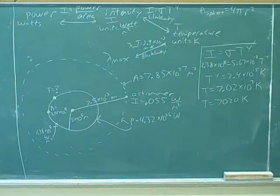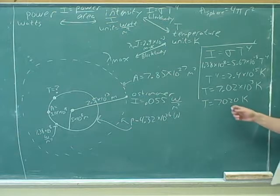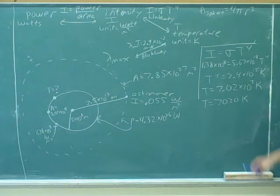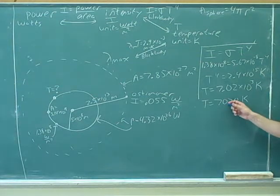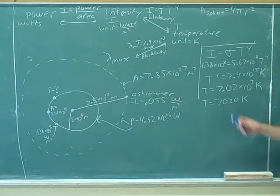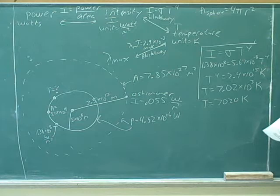7020. Does this make sense? What was the question asking us for? The temperature. Where? The surface of the star. All right. Well, this seems about right. This is a pretty high temperature, right? Maybe this isn't quite as high as we might expect, but this is out at the surface. It would be even hotter inside the star. So this is a pretty high temperature, so I guess this seems about right.